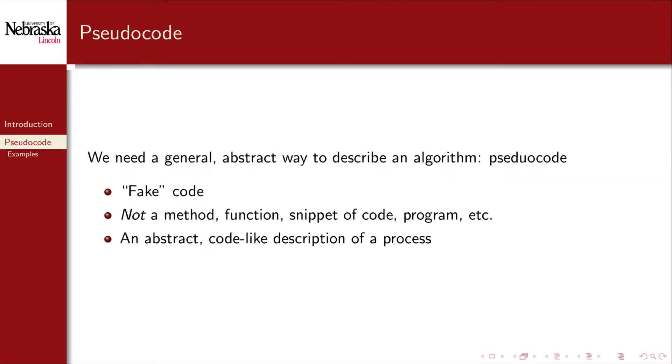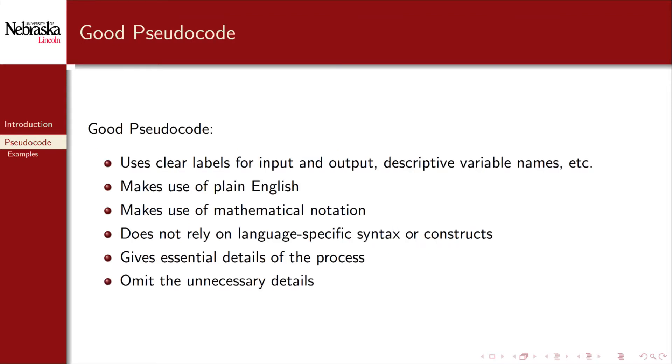Since we don't want our analysis tied to any particular system we also don't want our algorithmic descriptions to be tied to any particular language. We need a general way to describe steps in an algorithm without being encumbered by the particulars of a programming language. To do that we use pseudocode. Pseudo here meaning fake. Pseudocode is not a method, function, or snippet of code or even a full program. Instead it's a code-like description of a process. There are no specific set rules for writing pseudocode. If there were then it would be an actual programming language that we could compile and run. However there are several best practices when writing pseudocode.